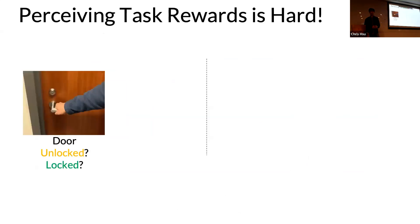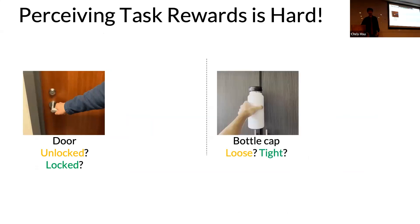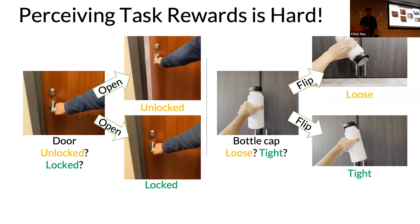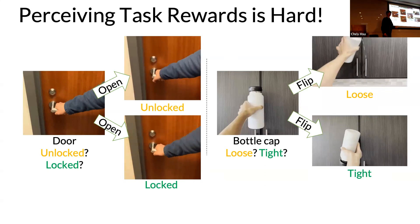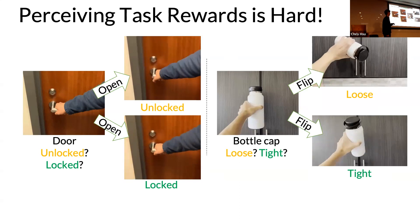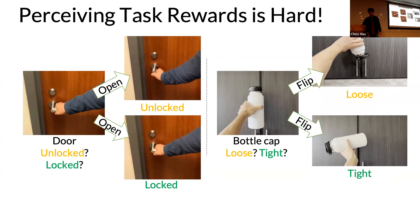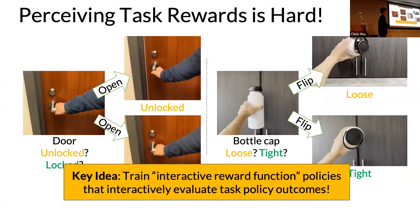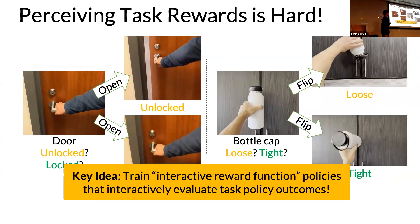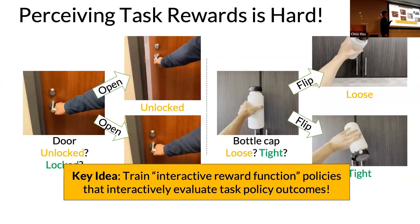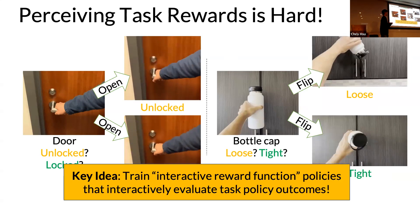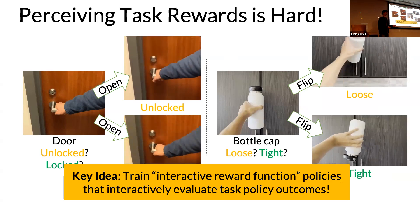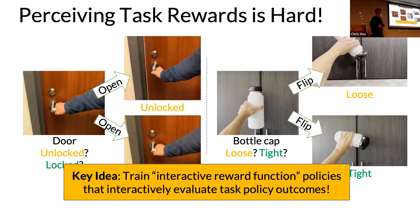Perceiving task completion from images is hard. If I show you an image of a closed door, can you tell if it's actually locked? Or an image of a bottle cap — is it fully tightened or a little loose? We just don't know from images alone. But by physically interacting with these objects, we can figure out if they're locked or unlocked, loose or tight. The key idea of our framework is: can we train interactive reward function (IRF) policies that interactively evaluate task outcomes, instead of relying on passive perception?